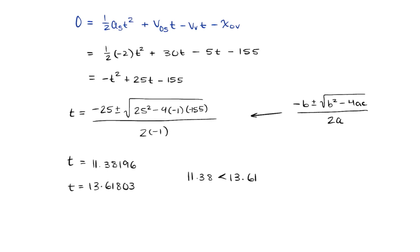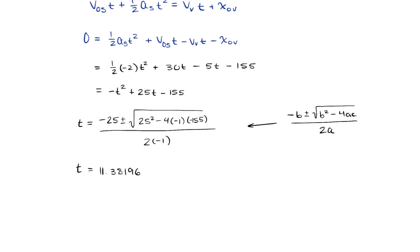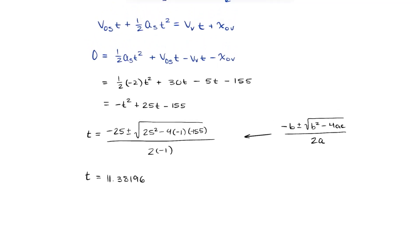So if we solve that using a calculator, we can get that t either equals 11.38196 or 13.61803. But once again, we'll have to account for the time that comes first because that's when the collision will actually occur. And since 11.38 is less than 13.6, we'll have to eliminate 13.6. And that means the time is 11.38.